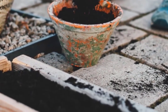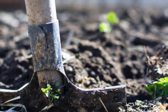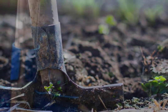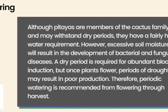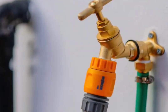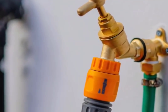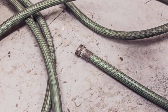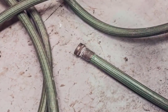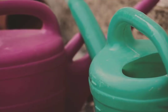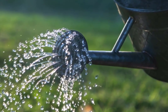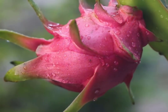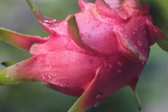Apply small amounts of iron sulfate at the base of the plants growing in neutral and low pH soils. Although pitayas are members of the cactus family and may withstand dry periods, they have a fairly high water requirement. Excessive soil moisture will result in development of bacterial and fungal diseases. A dry period is required for abundant bloom induction.